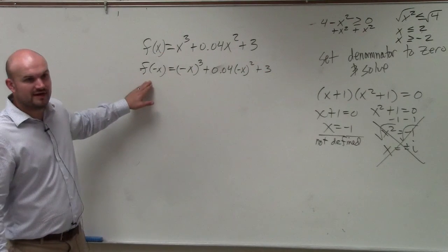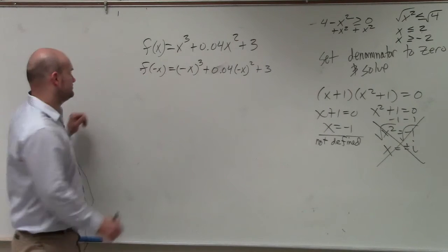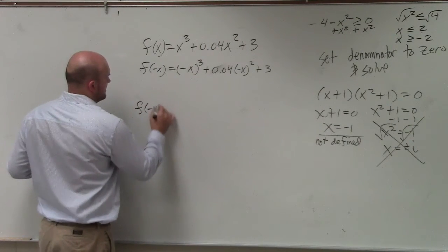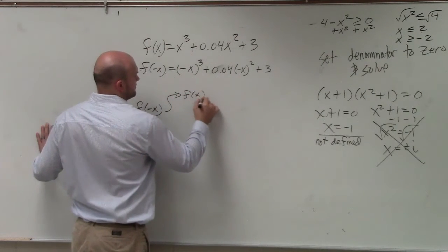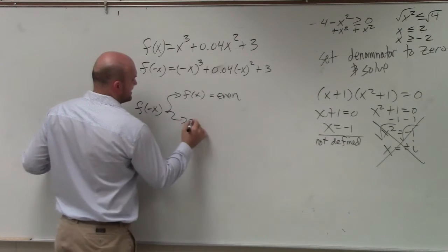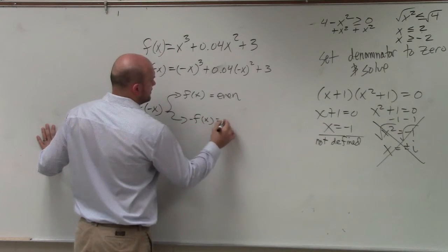Does everybody see how I evaluated for f of negative x? Now, when you evaluate for f of negative x, if you get back the original function, then it's even. If you get back the opposite of the original function, it's odd.